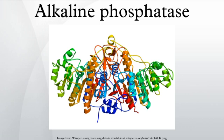In humans, alkaline phosphatase is present in all tissues throughout the entire body, but is particularly concentrated in liver, bile duct, kidney, bone, and the placenta. Humans and most other mammals contain the following alkaline phosphatase isoenzymes: ALPI (intestinal), ALPL (tissue nonspecific), and ALPP (placental).